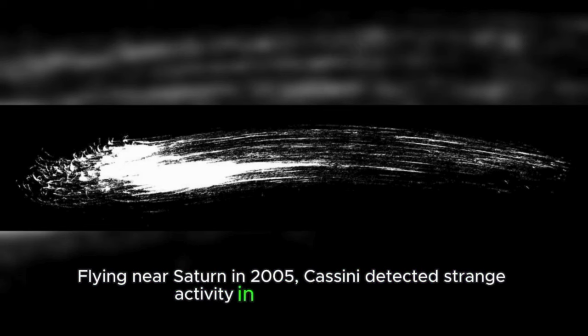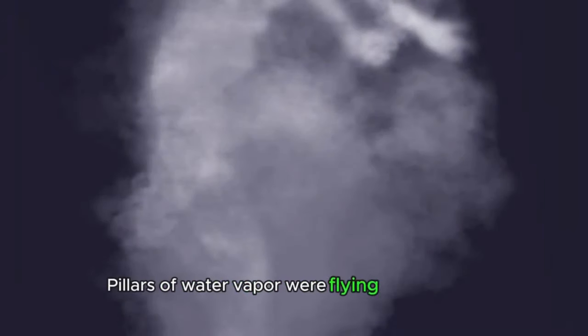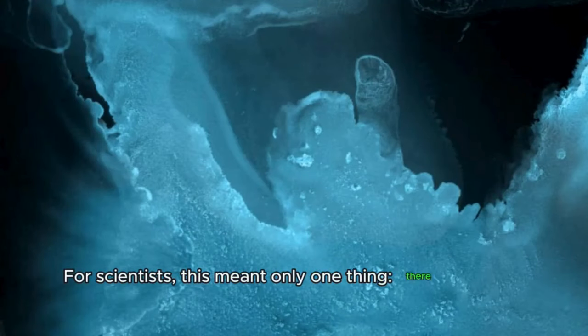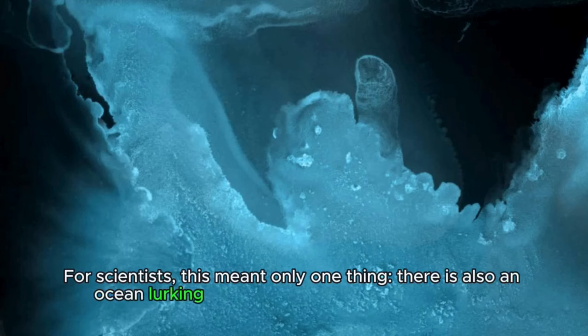Flying near Saturn in 2005, Cassini detected strange activity in these tiger streaks. Pillars of water vapor were flying out of them. Moreover, Cassini also noticed that the Moon wiggled as it rotated. For scientists, this meant only one thing, there is also an ocean lurking under the ice column of Enceladus.